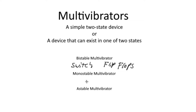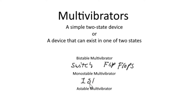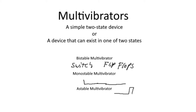A monostable multivibrator has only one stable state. For the sake of demonstration, let's say this monostable multivibrator's stable state is low — it's going to want to stay low. Because that is its stable state, it will want to remain in the low state as long as it possibly can until it is acted upon by a trigger signal, in which case it will spring into its unstable state.